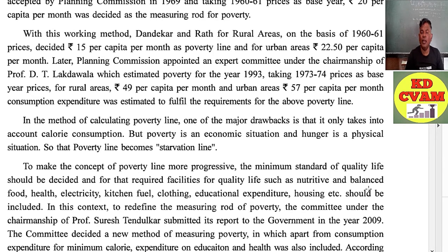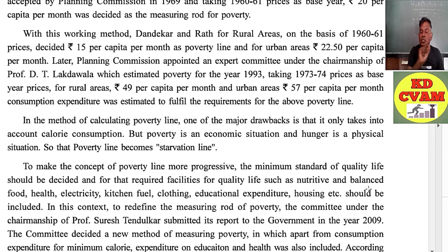One of the major drawbacks of the method of calculating the poverty line is that it only takes into account calorie consumption. But poverty is an economic situation while hunger is a physical situation, so the poverty line essentially becomes a starvation line. To make the concept more progressive, the minimum standard of quality life should be decided, including nutritive and balanced food, health, electricity, kitchen fuel, clothing, educational expenditure, housing, etc.